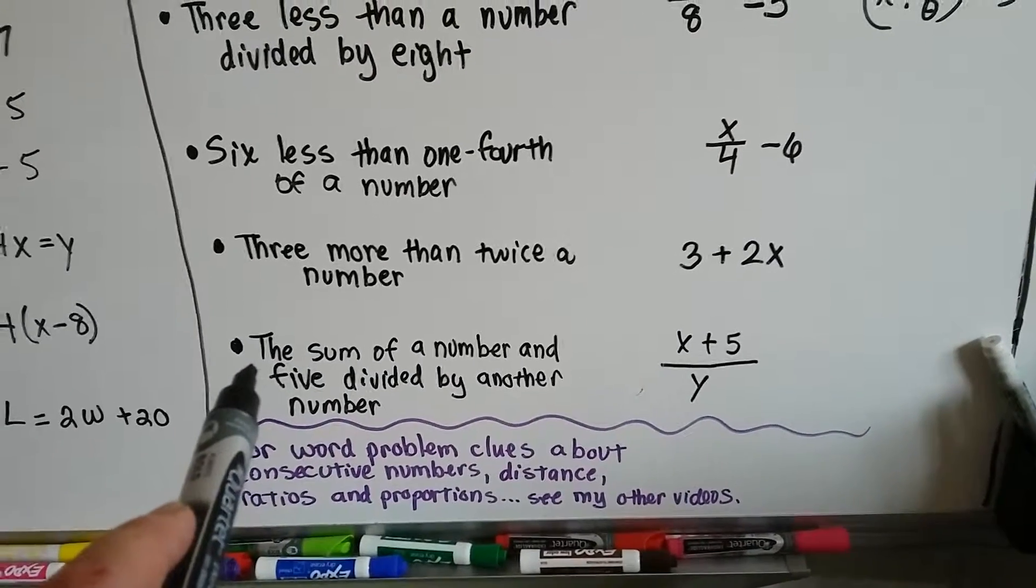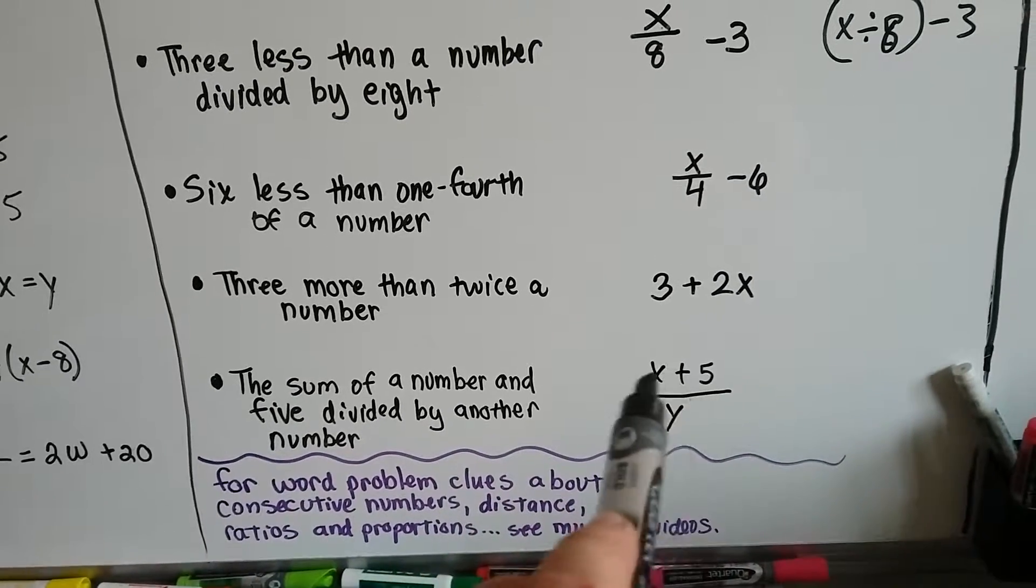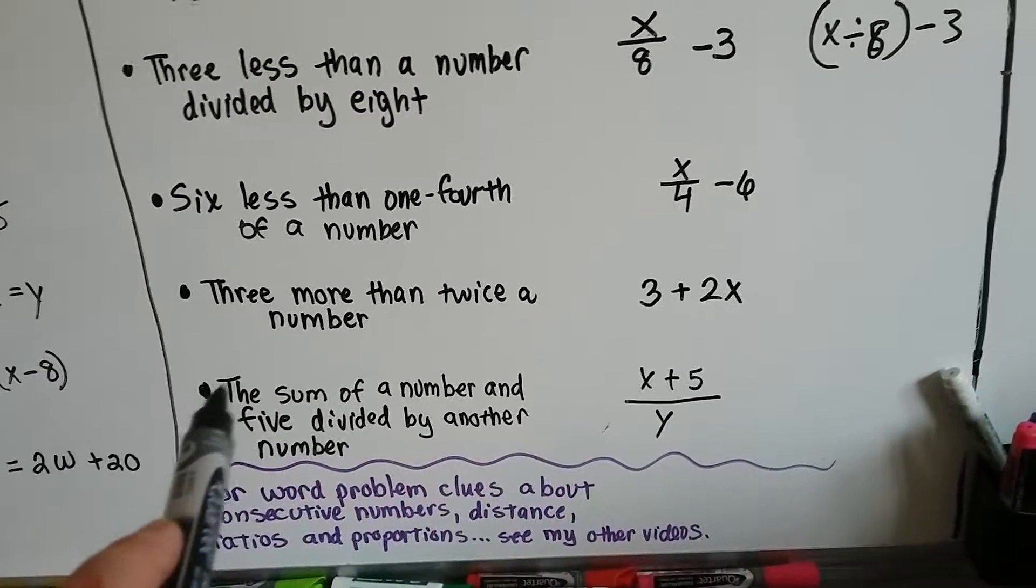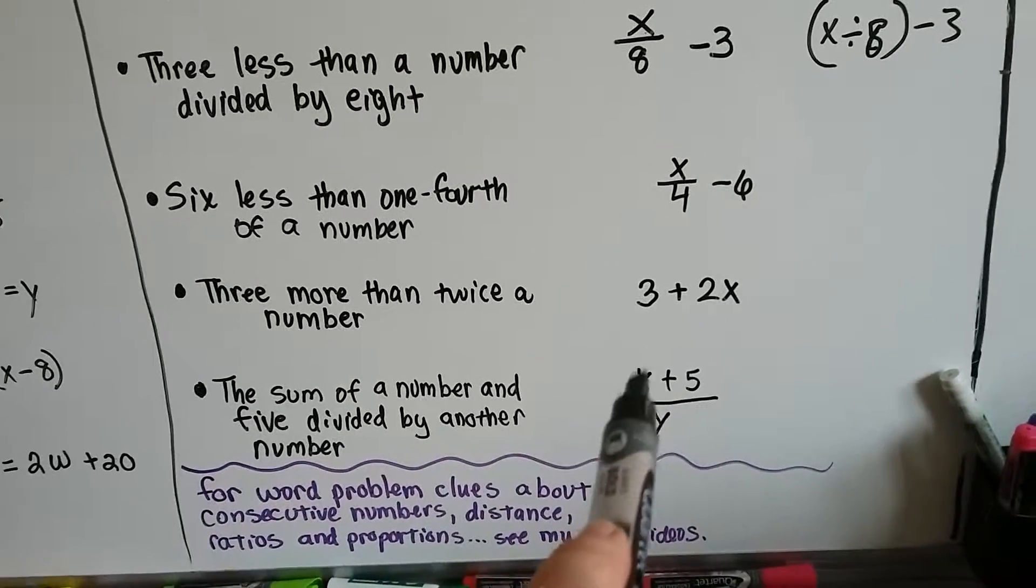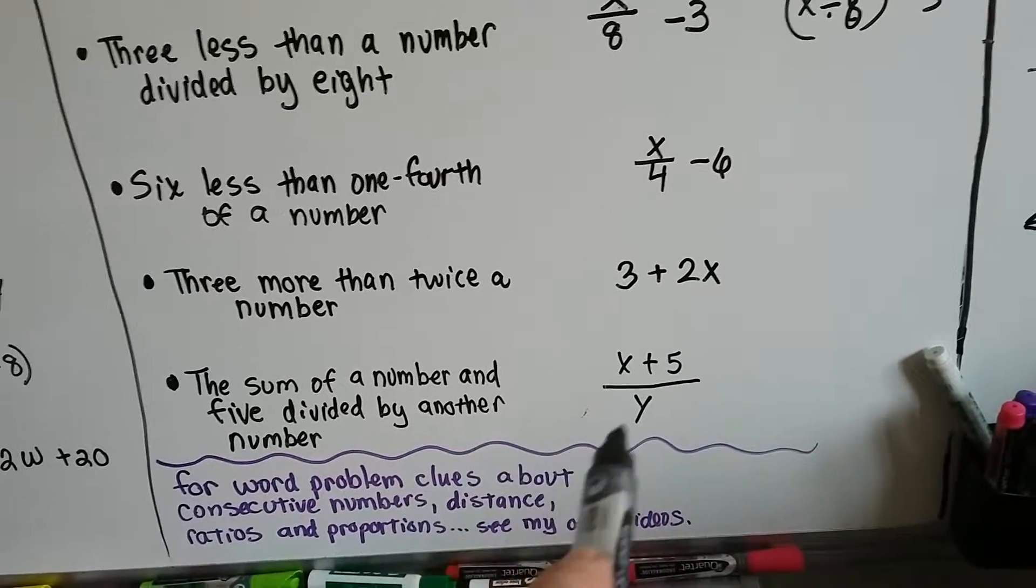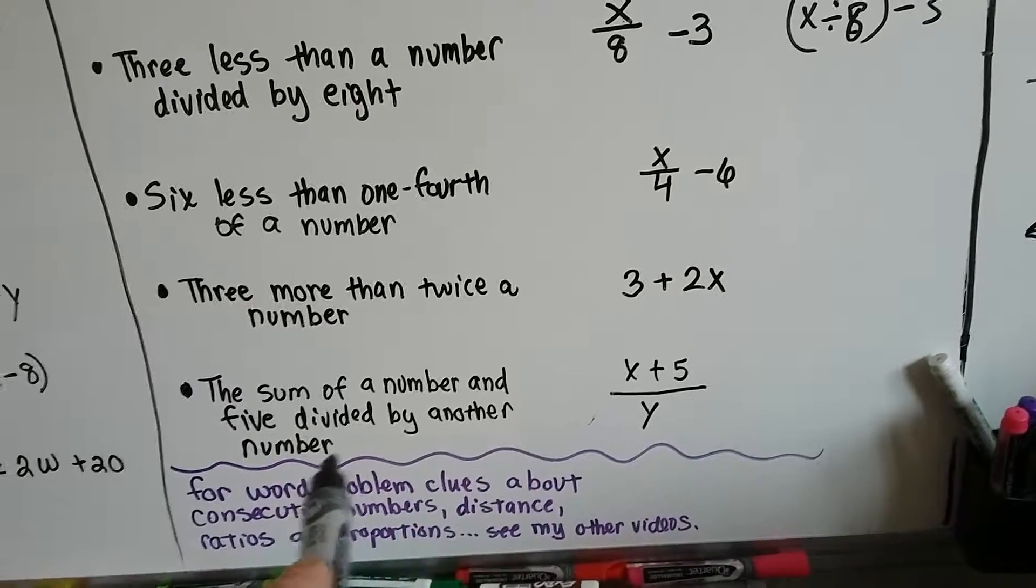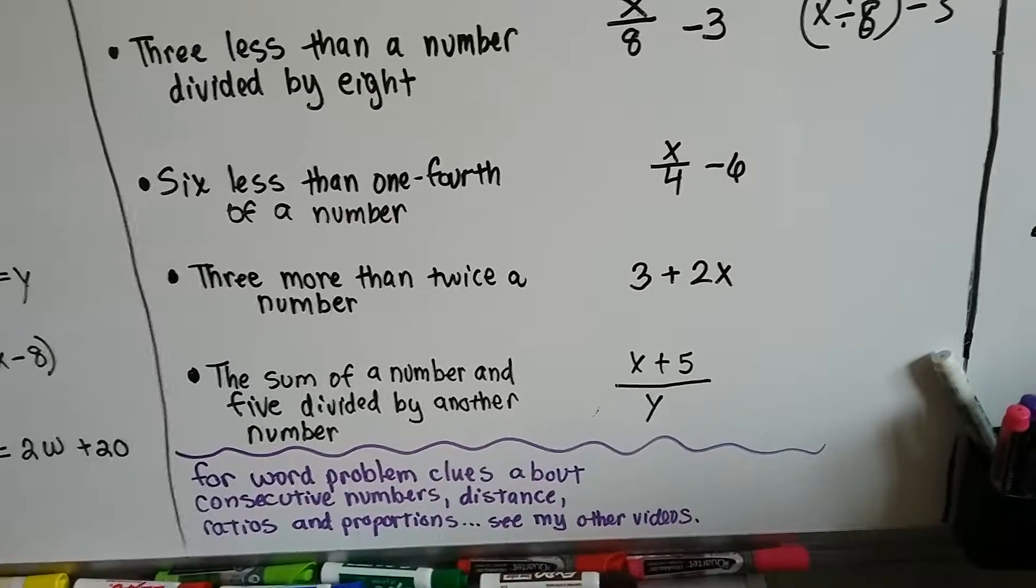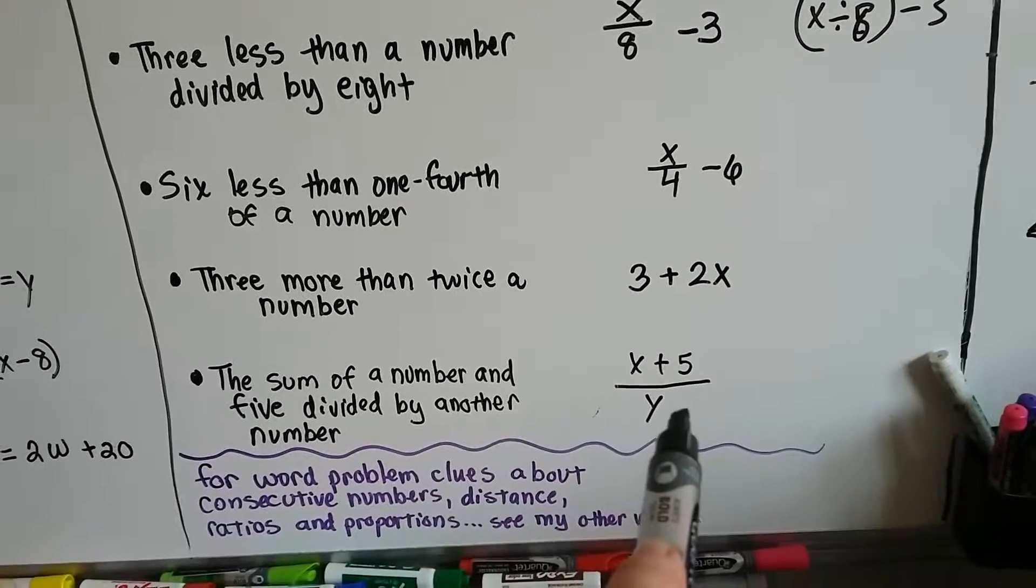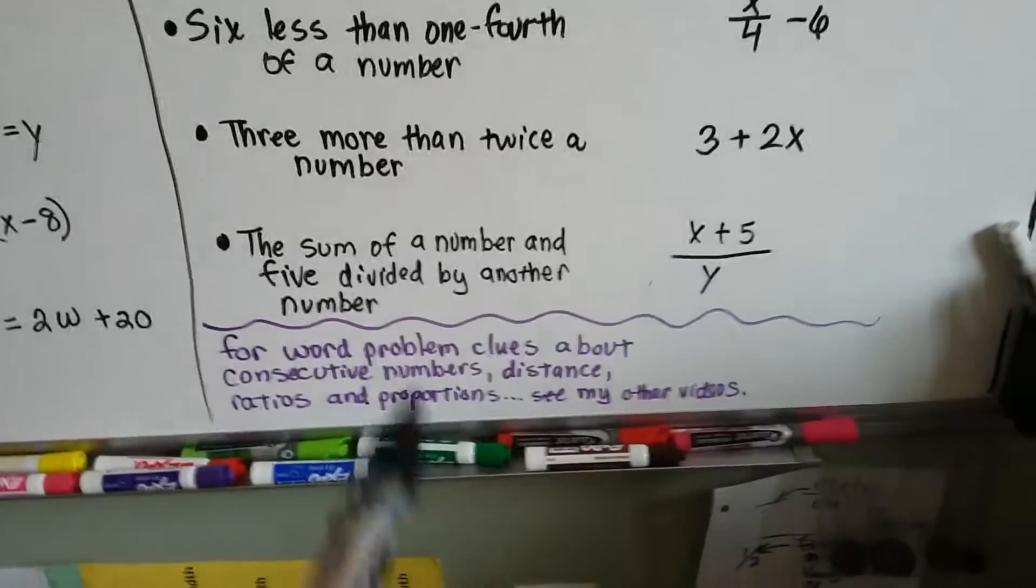The sum of a number and 5 divided by another number. So you would have x plus 5, but it's divided by another number, so we put it over the fraction line, and we put it over y. That's the another number. That's the sum of a number and 5 divided by another number.